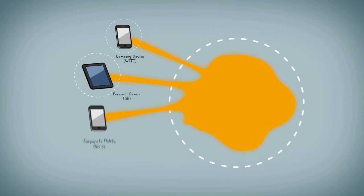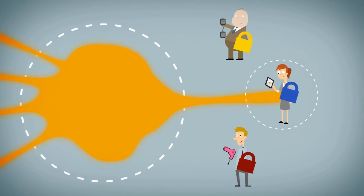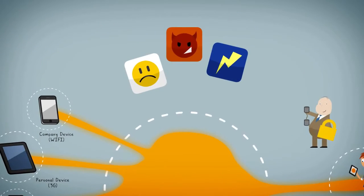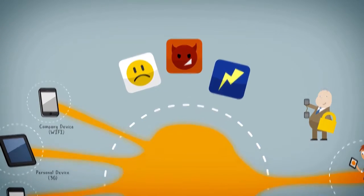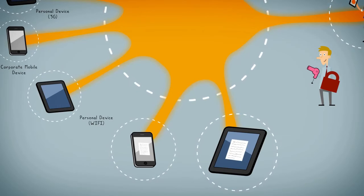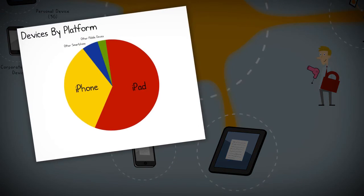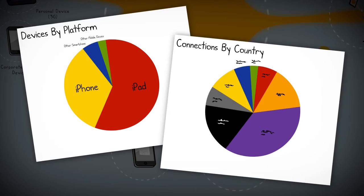You can set granular policies, block access based on compliance status, protect your corporate network from bad or non-compliant apps, distribute corporate docs to secure doc containers on users' mobile devices, and monitor mobile user activity, regardless of device ownership.